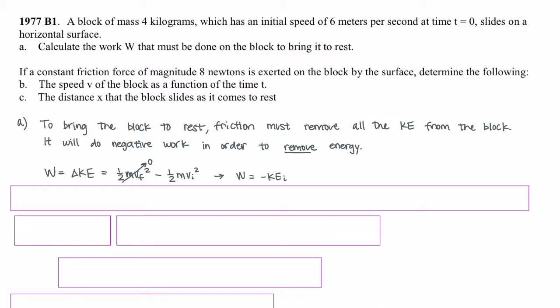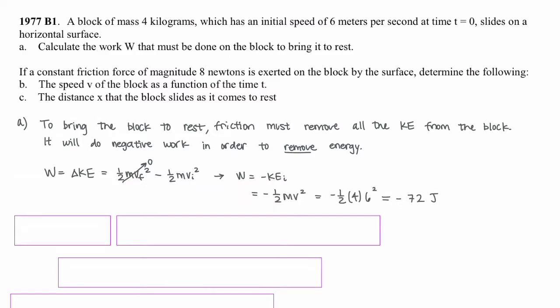The work equals the change in kinetic energy. We can expand this as ½mv_final² - ½mv_initial². Since the object comes to rest, v_final equals 0, and we can eliminate the first term. The work done equals the negative of the initial kinetic energy. Plugging in our values, we get negative 72 joules.